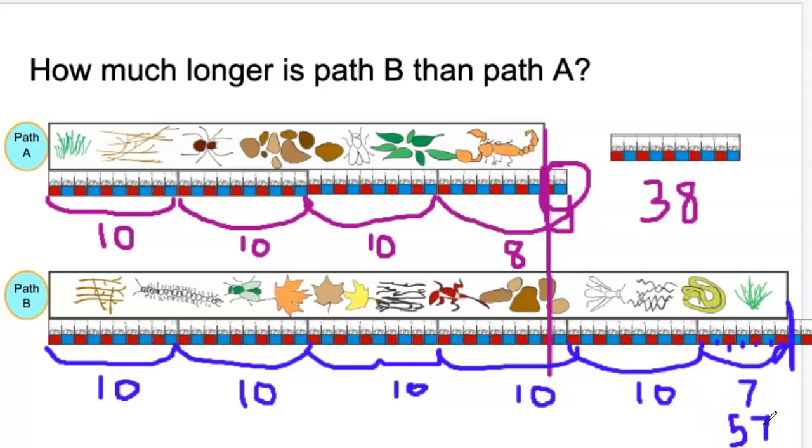And now, my big question, I know I had to do a lot of work to get to my big question, but my big question is how much longer is path B than path A? Well, I know that path B is 57 centimeters and path A is 38 centimeters. So, I want to figure out 57 minus 38. And this is going to be your job in Seesaw today.